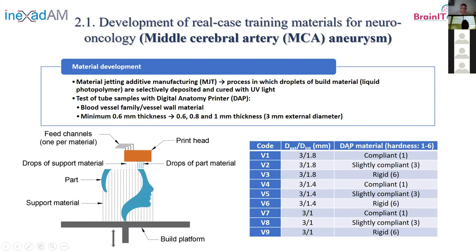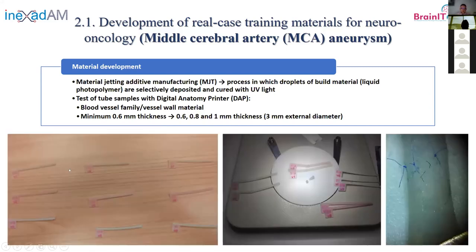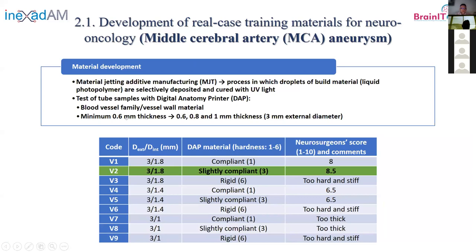We produced all these combinations of different thicknesses and different materials. Our neurosurgeons did practical sessions with these materials to determine which was best for the training session. We selected the 0.6 mm thickness — the minimum that could be printed — with the medium stiffness material.